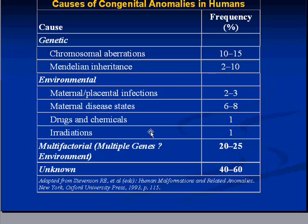On the environmental side, which is overall about as big as the genetic side, significant maternal placental infections of various types are causes — rubella being the biggest, but there are others like CMV. Maternal disease states of various kinds, drugs, chemicals, toxins, and radiation are also environmental causes.